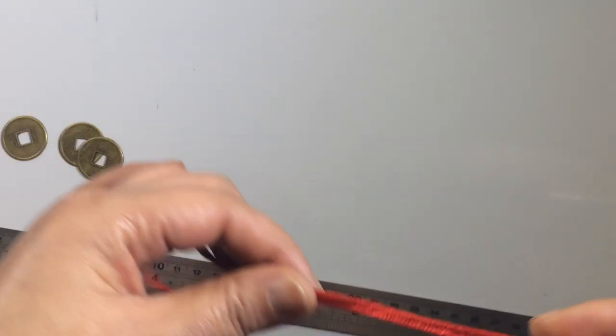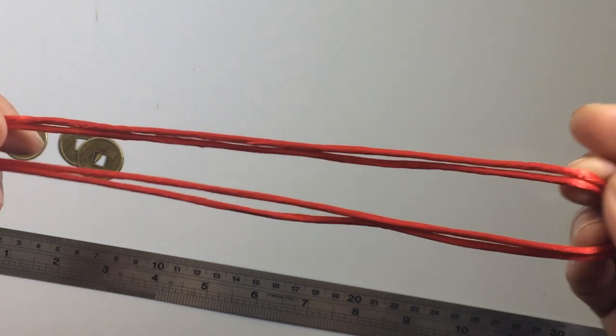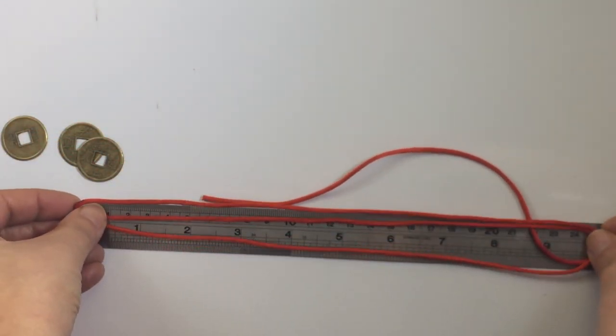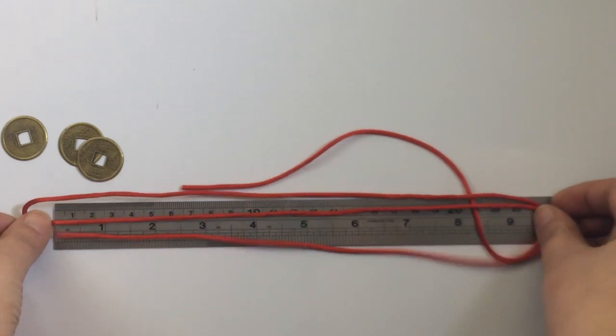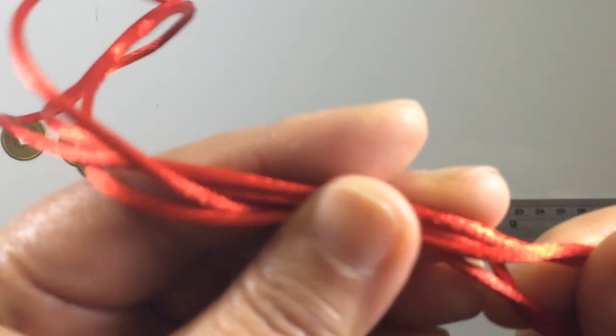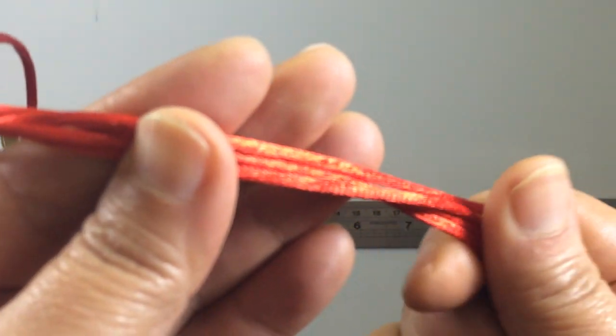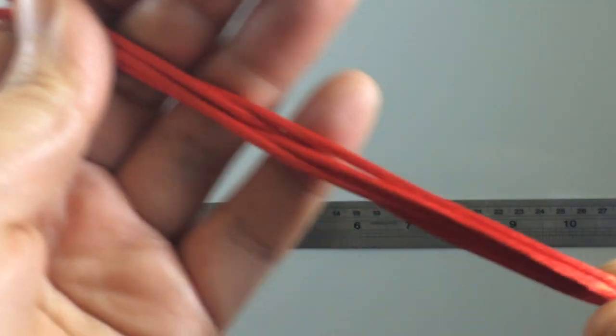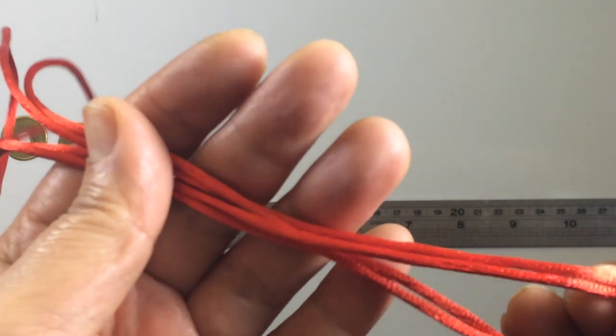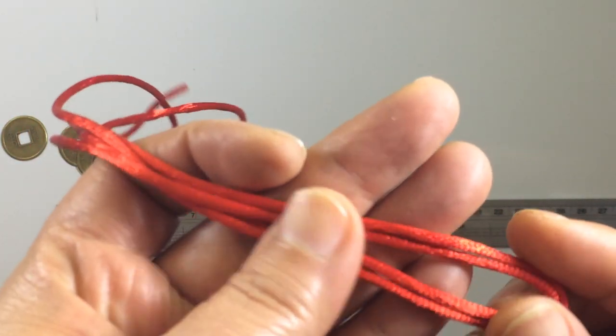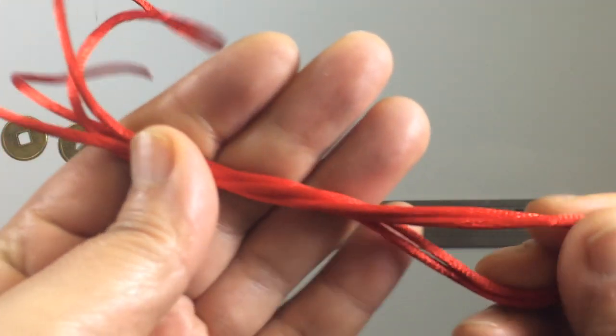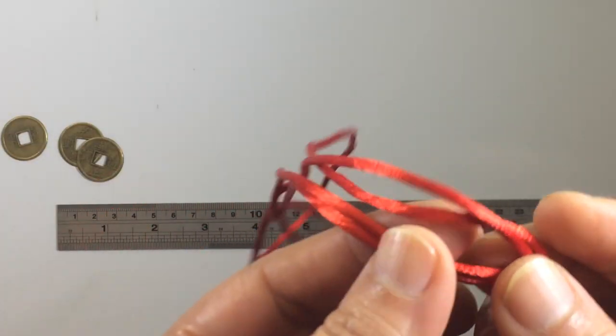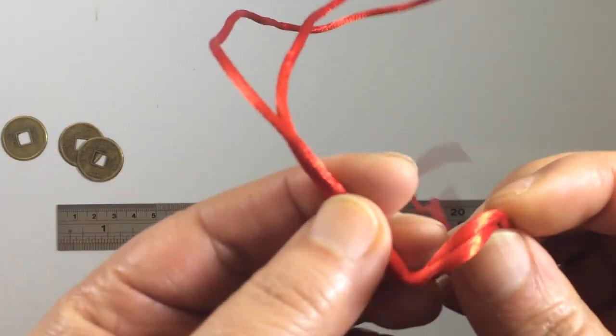We need a piece of cord. The cord I already have is about a meter long and it's red. This type of red in China is especially used for good luck. When you use it, make sure it's soft because you need to tie tight knots. You don't want it to be too stiff.